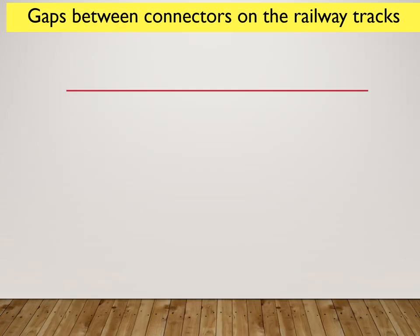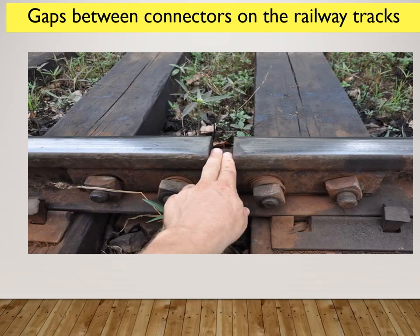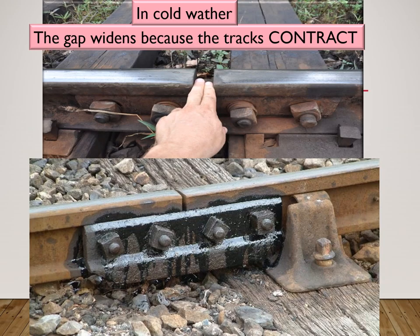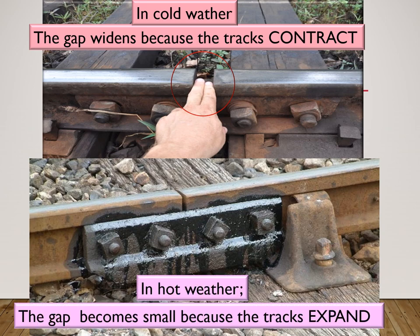There are also gaps between connectors on the railway tracks. The reason or inference for this is so the railway tracks will not push against each other and bend when they expand in hot weather. In cold weather the gap widens because the tracks contract, and in hot weather the gap becomes small because the tracks expand.